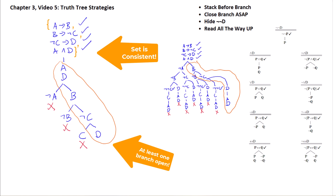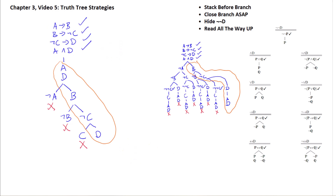Stack before you branch, close each branch as soon as you can, and hide your double negation decomposition rule if you like. Always make sure you read all the way up the branch looking for a contradiction, because the contradictions can sometimes be pretty far apart. Hope that helps.